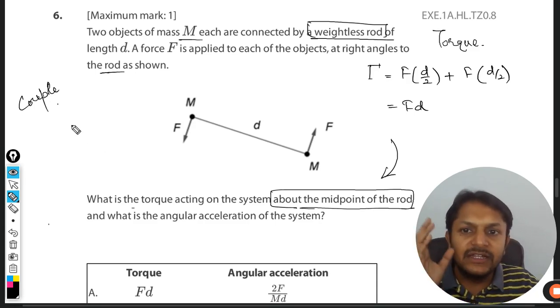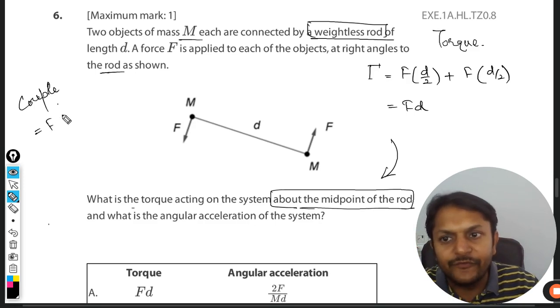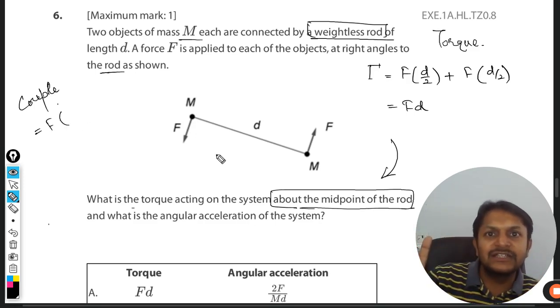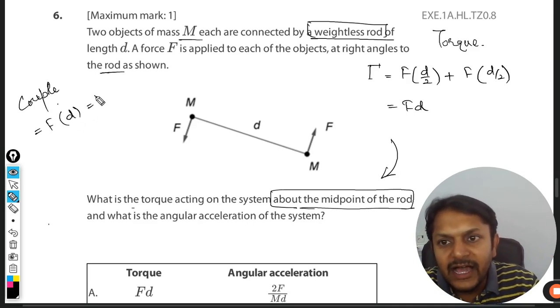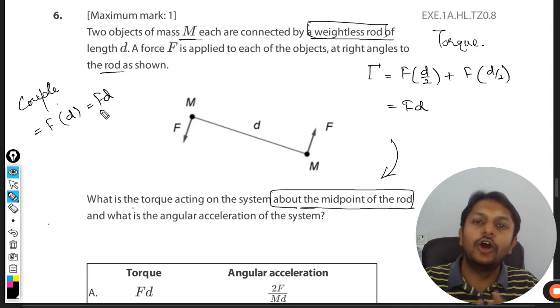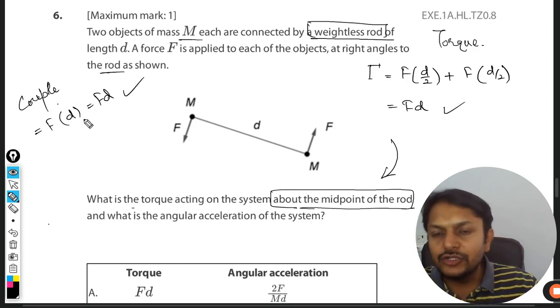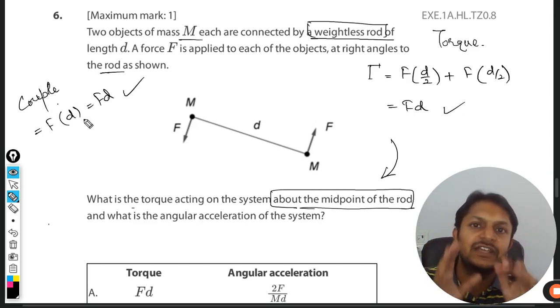But in the case of couple, what we do is it is the product of the force with the perpendicular distance between the two forces, which in this case is clearly d. And hence the total torque or the couple is Fd, which is the same as this. So these are two different methods in which we can find the torque. You can do whatever you are comfortable with.